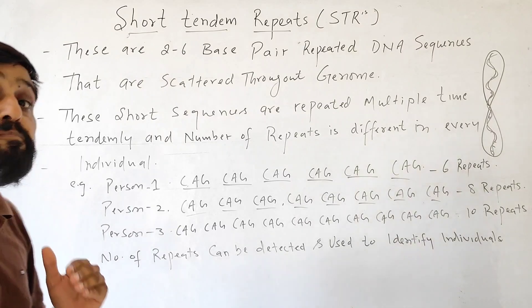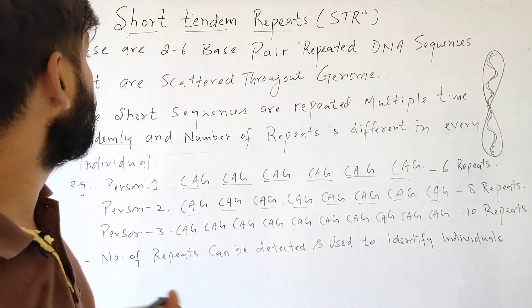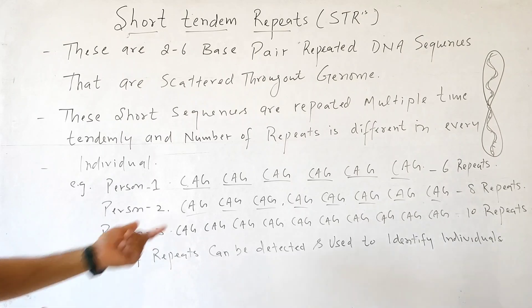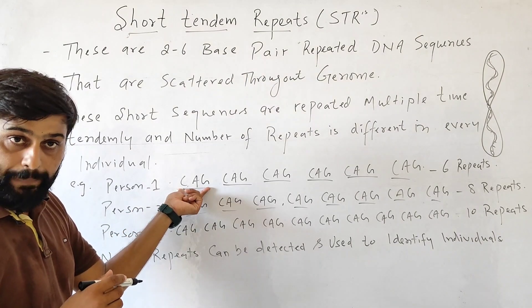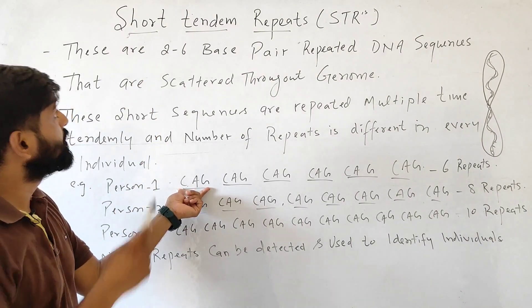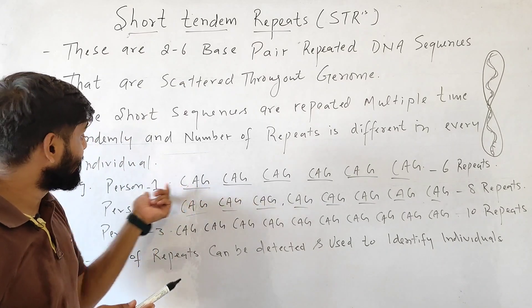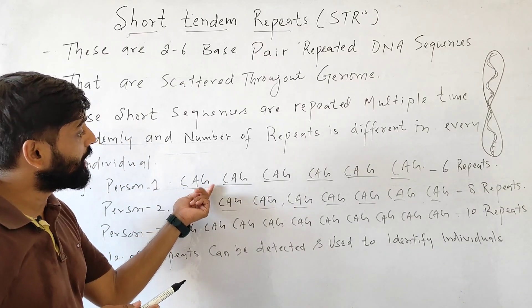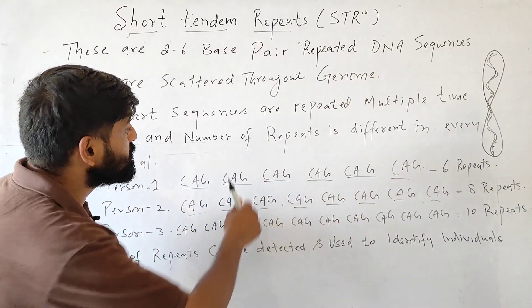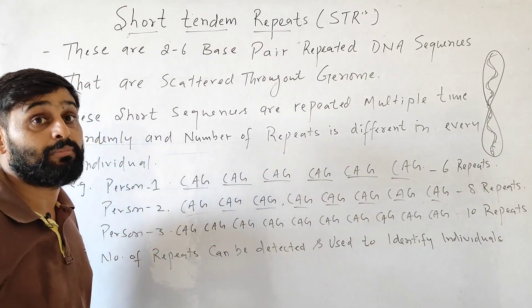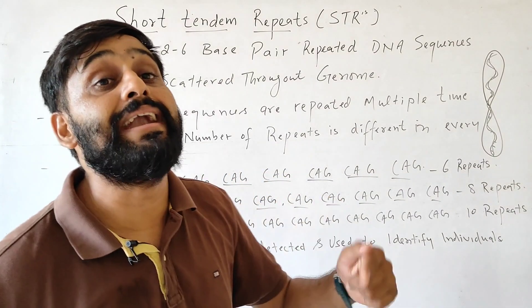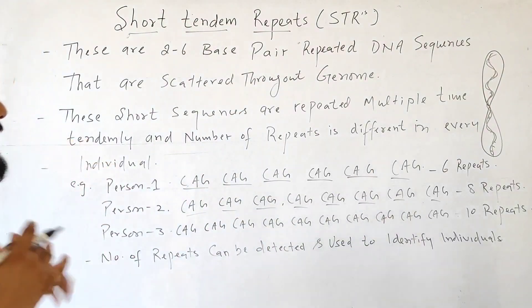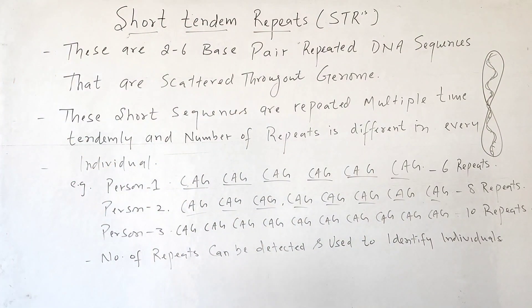These short sequences are repeated many times — multiple times — in a tandem fashion, meaning one after another. For example, CAG repeats continuously: when one CAG ends, another CAG begins, with no other sequence in between. This type of repeat is called tandem repetition.